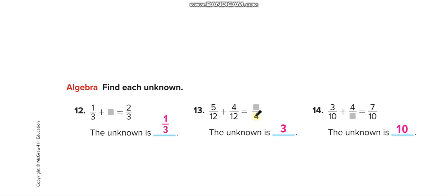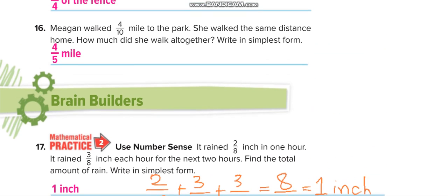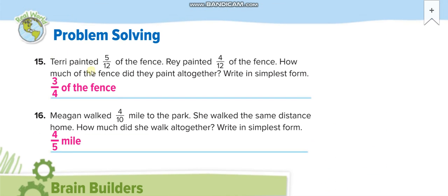Here, the denominator is the same, so 10. This one, now Terry painted 5 twelfths of the fence, Ray painted 5 twelfths of the fence. How much of the fence did they paint altogether? You will add them: 5 plus 4 is 9 over 12, then you divide it by 3 to simplify: 3 over 4.